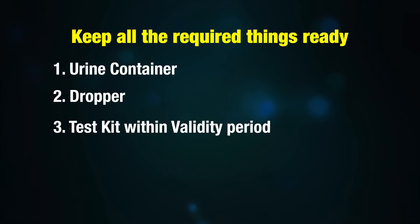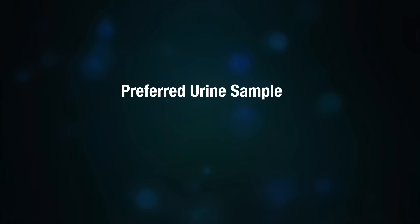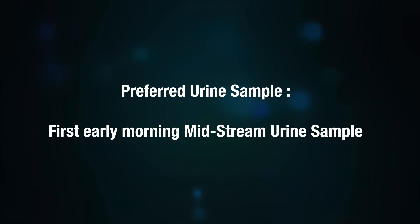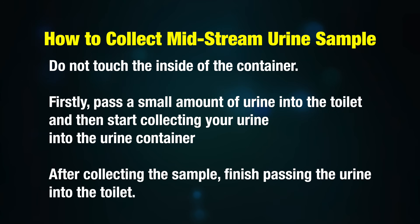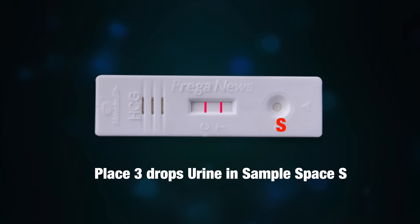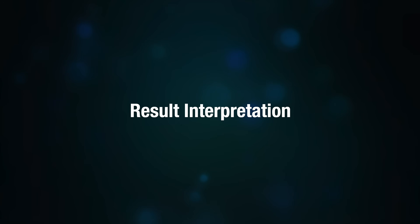How to use a pregnancy test kit at home: check the expiry date and make sure you have everything ready. The sample taken is a midstream first-void first-morning sample, as it has the highest amount of beta HCG. To take the midstream sample, first pass a small amount of urine into the toilet, then start collecting your urine into the container — do not touch the inside of the container. After collecting the sample, finish passing urine into the toilet, then place three drops of urine into the sample space. Leave the kit undisturbed for three to five minutes, then read the result.